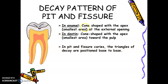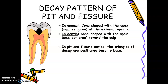In the enamel, the pattern is cone-shaped with the apex, or the smallest area, at the external opening. So when you look at it in an actual patient, it looks small. But when you start the tooth prep, it's large inside. So it's very important for you to explain to the patient, before you start the procedure, that it is already large inside.